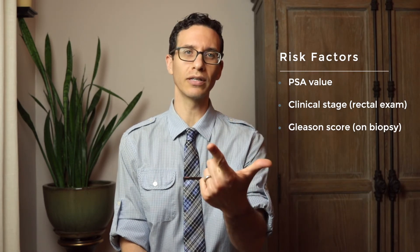When evaluating prostate cancer, we assign patients into groups based on their risk. There are traditionally three groups: low, intermediate, and high risk. The way patients get put into these groups is by looking at three things: the PSA, the rectal exam, and the Gleason score. And I'm going to explain all three of those for you.